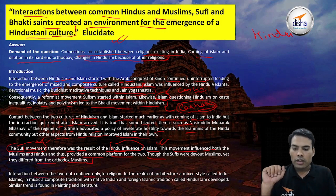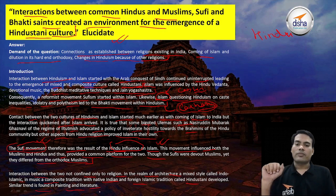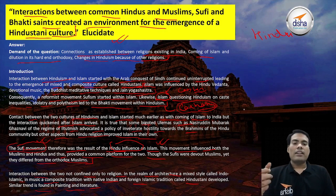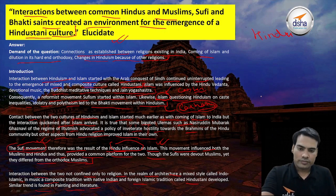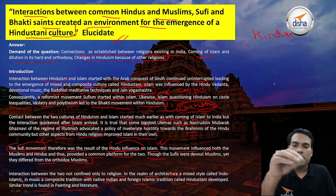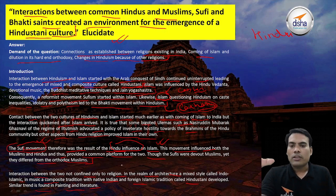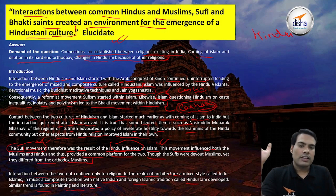The interaction between the two was not confined only to religion. In the realm of architecture, a mixed style called Indo-Islamic developed. In music, a composite tradition combining native Indian and foreign Islamic traditions called Hindustani developed. A similar trend is found in painting and literature. These aspects — music, traditions, painting, and sculpture — all conjoined between Muslim invaders and the Hindus living here, evolving after the 12th–13th century.